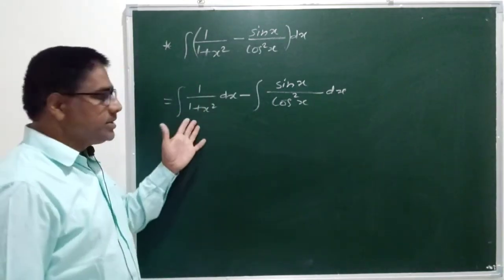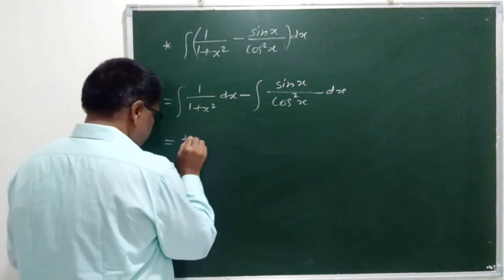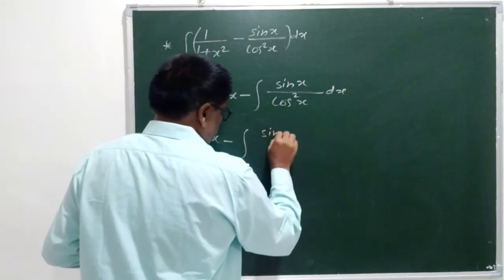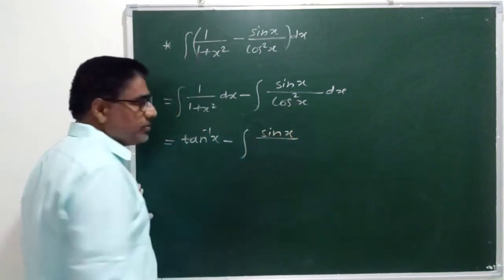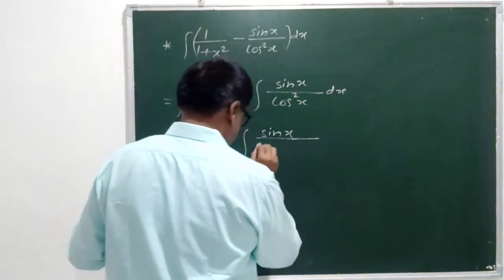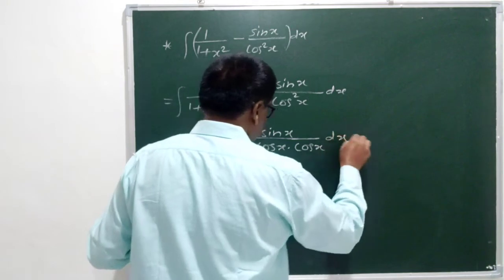1 upon 1 plus x square integration is tan inverse x, standard formula tan inverse x minus sin x upon, we can write this cos square x as cos x into cos x.